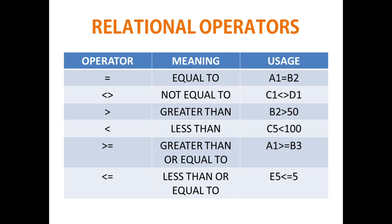For example, if A1 equals B2 — where A1 and B2 are cell addresses — if the values inside them are equal, you can choose to do something; if not, you can do something else. In the next example, C1 not equal to D1: if the values are not equal, the result is true; if the values are equal, the result is false. You can use all other relational operators in the same way.